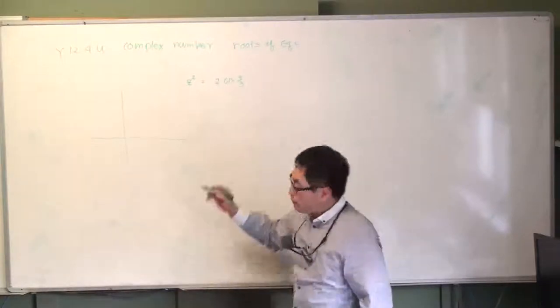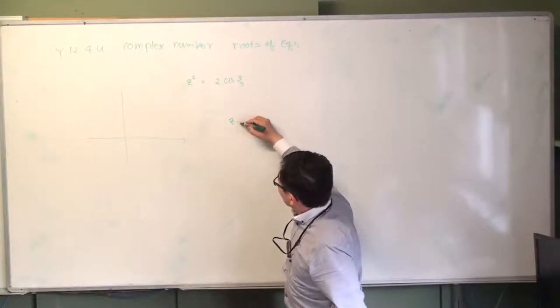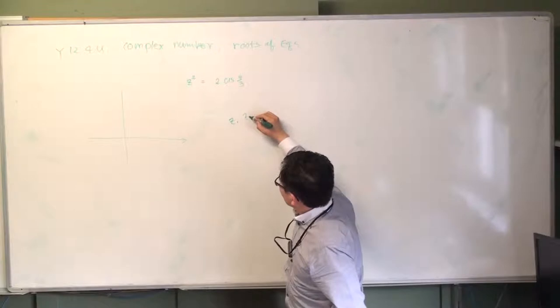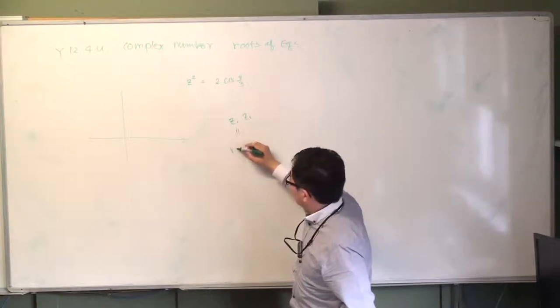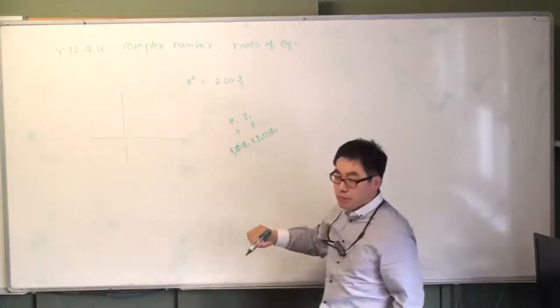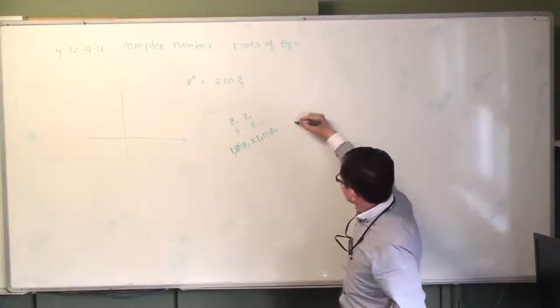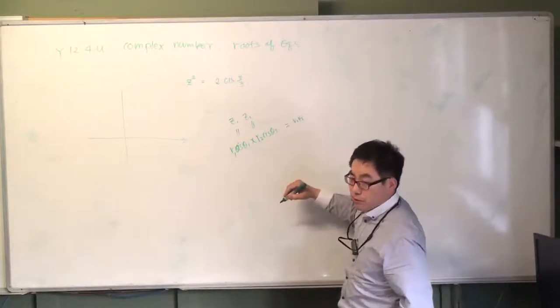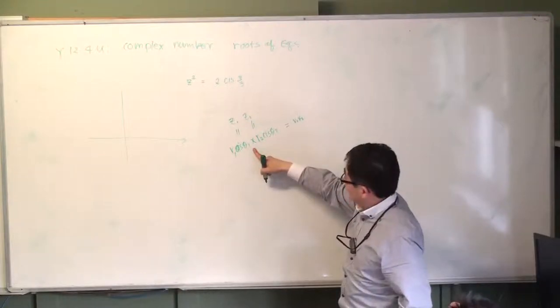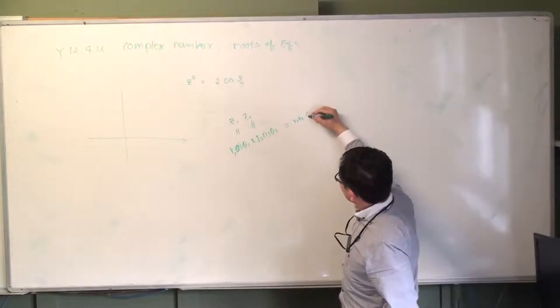So as you remember, if you have certain complex numbers Z1 equals R1 cis θ1, Z2 equals R2 cis θ2, if you multiply them, the modulus will become product R1R2, and angle arguments will be addition.